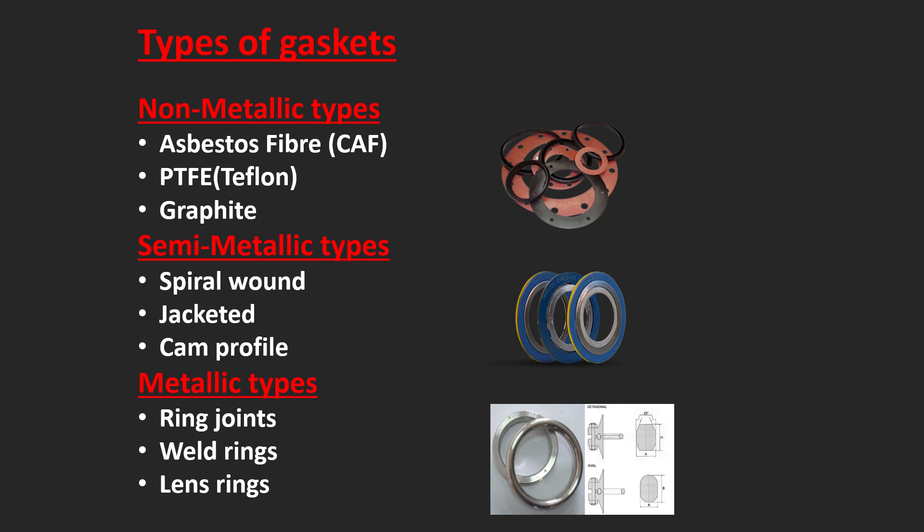Types of gaskets: Non-metallic types include Asbestos Fibre, PTFE (Teflon), and Graphite. Semi-metallic types include Spiral Wound and Cam Profile. Metallic types include Ring Joint, Weld Rings, and Lens Rings.